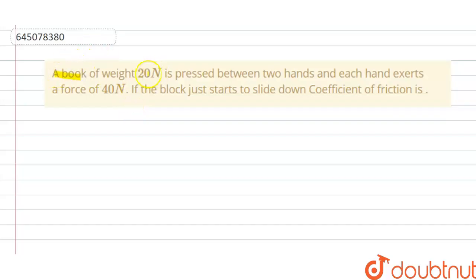A book of weight 20 newton is pressed between two hands and each hand exerts a force of 40 newton. If the block just starts to slide down, coefficient of friction is... So we have to find the coefficient of friction here.